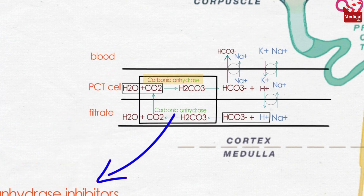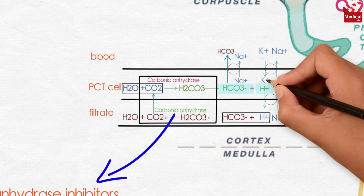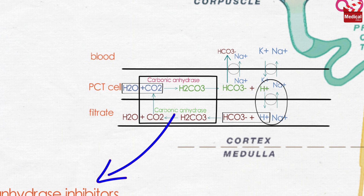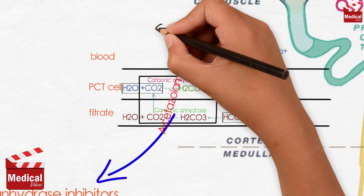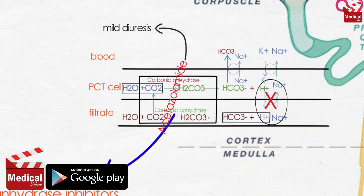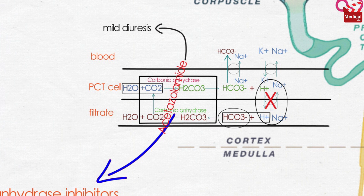Carbonic anhydrase catalyzes the reaction of carbon dioxide and water, leading to the formation of carbonic acid, which spontaneously ionizes to a proton and bicarbonate. So the ability to exchange sodium for a proton is decreased, and the presence of acetazolamide results in a mild diuresis. Bicarbonate is also retained in the lumen, with marked elevation in urinary pH, meaning the urine becomes alkaline. The loss of bicarbonate causes metabolic acidosis and decreased diuretic efficacy following several days of therapy.